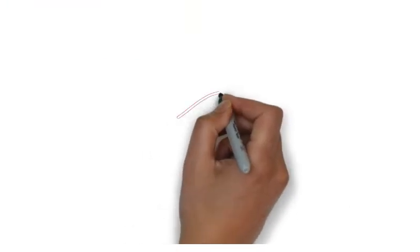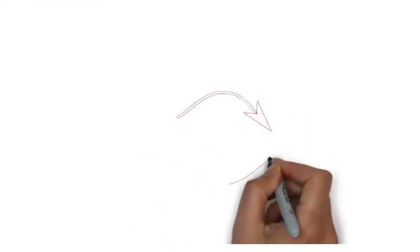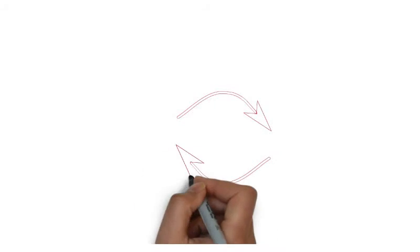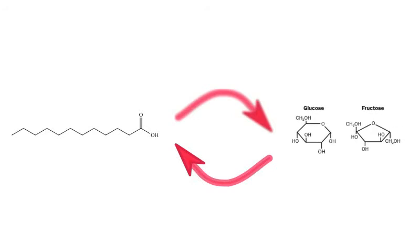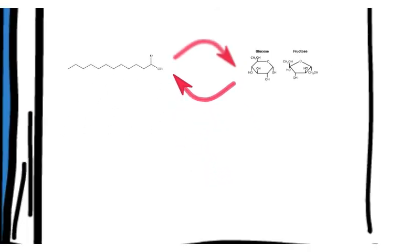The main function of glyoxysomes is the conversion of fatty acids to carbohydrates. These functions are called fatty acid metabolism.